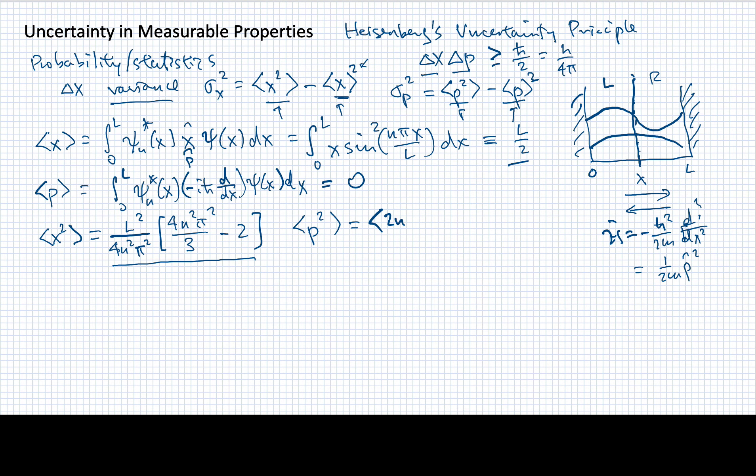So this momentum operator squared is just the same as the expectation value over a state of the particle in a box of 2m times the energy. And we know what the energies of the particle in a box are. They are given by h²n² over 8mL². So the m's will cancel, the 2 will cancel with the 8 to make a 4, and we'll end up with a value that is n²h² over 4L². So this is the value for P squared.